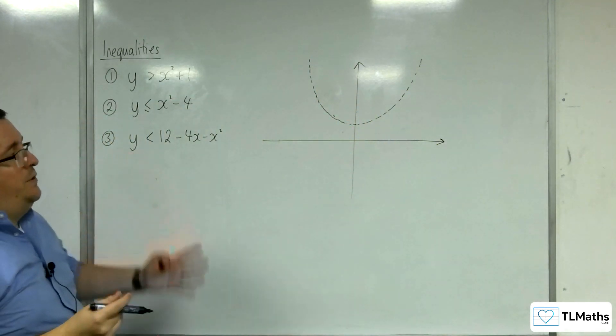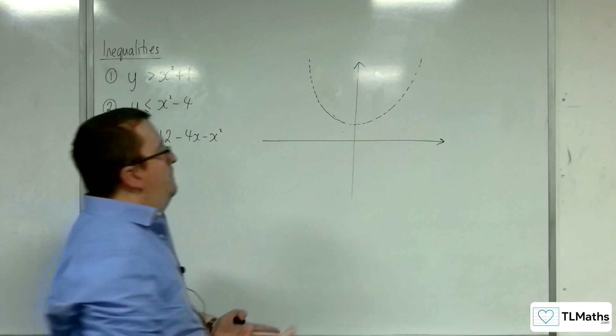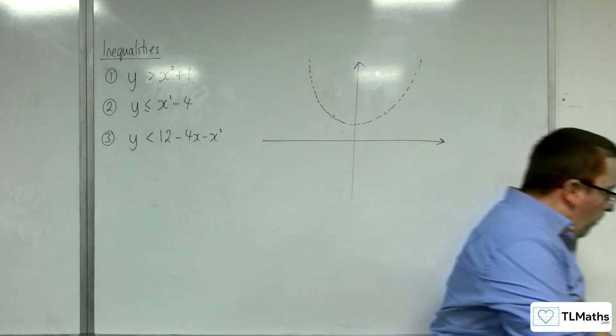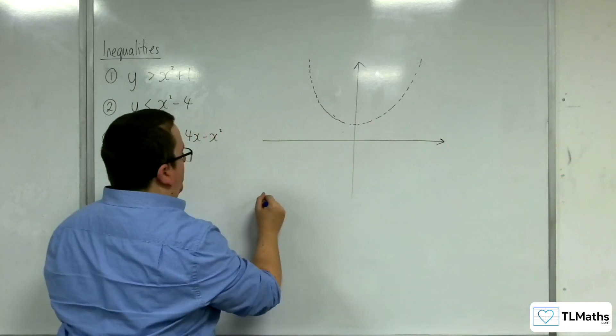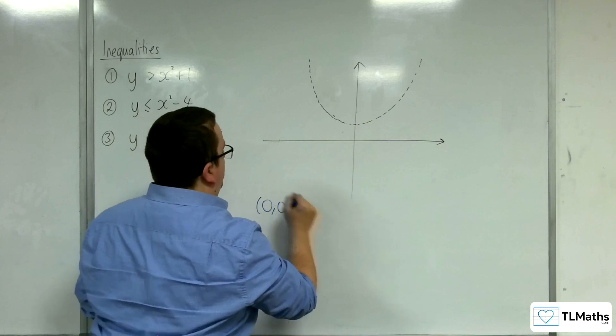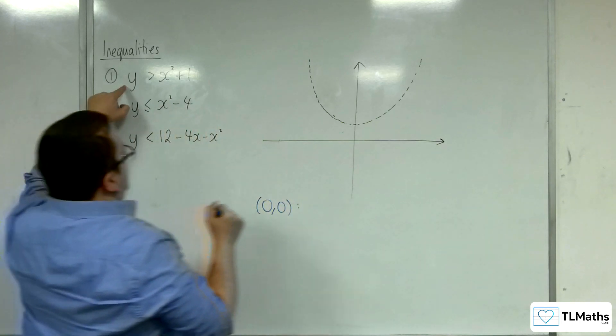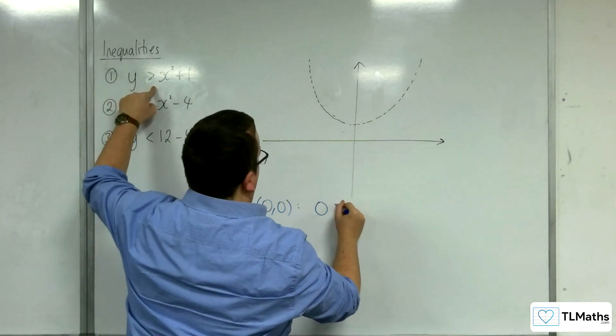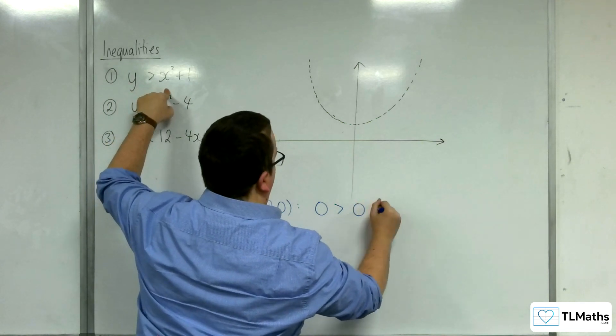So then we need to identify which region we want, okay. So, if we substitute in zero, zero, just as we did for the linear inequalities, we've got zero is greater than zero squared plus one.